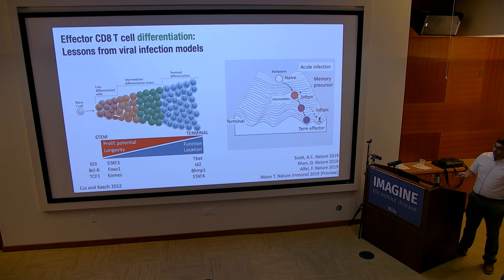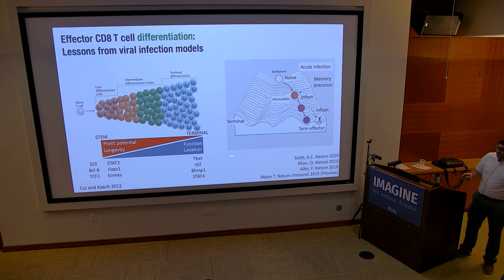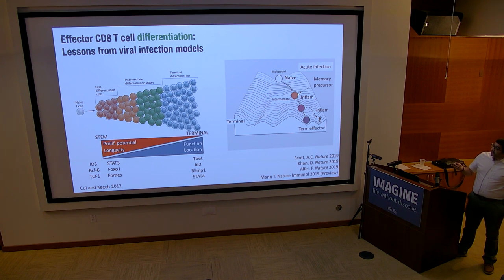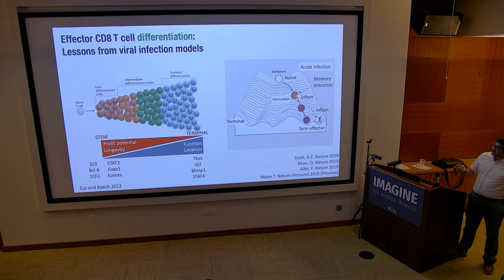We and others have described a number of transcription factors associated with either the memory state, the memory precursor state, or the terminal effector state. The role of these transcription factors has been fairly well described for these different differentiation states, as well as for TRMs and exhausted cells. We can also think about this as a Waddington plot: naive T cells start with lots of potential, but as they differentiate they trade off proliferative capacity and memory potential for increased function and shorter lifespans. Signals driving this in acute infection include inflammation, but some cells with less differentiated states remain stable and go on to make memory.